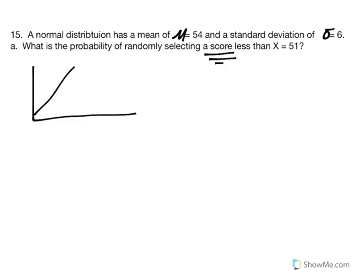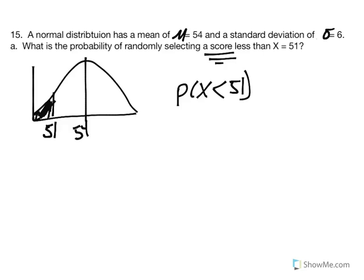Since we're talking about a score in the distribution, let's begin by sketching. We have the mean in the center at 54. A score of 51 is to the left, so we plot 51 as our x value. We want to know the probability of obtaining an x value of 51 or less — probability of x less than 51. Since this is an x value, we use z equals x minus mu divided by standard deviation, with no need to calculate standard error of the mean.